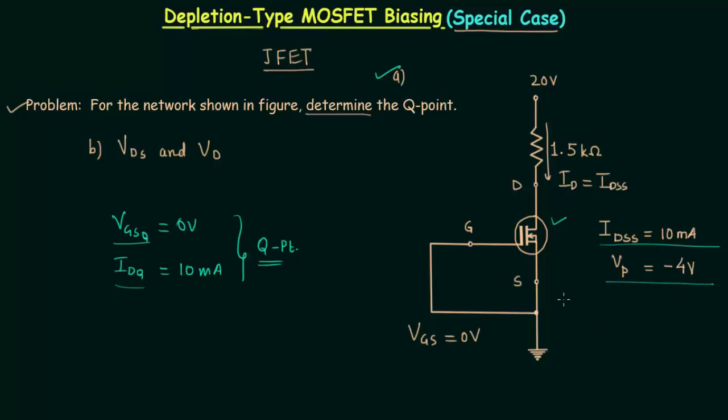If a depletion-type MOSFET is biased using this biasing scheme, you will straightaway know the operating point because VGSQ will be zero always and IDQ will equal IDSS. So this biasing scheme is very simple.